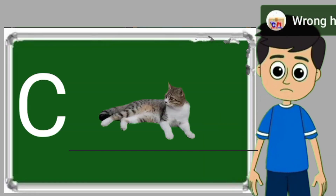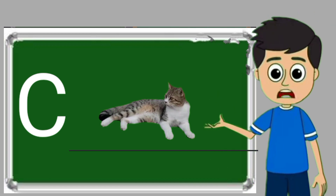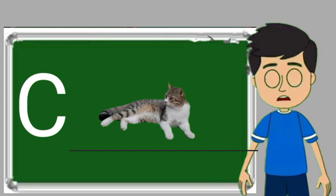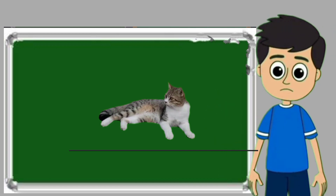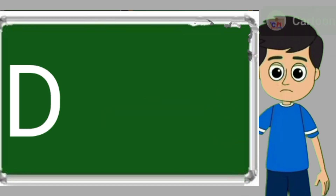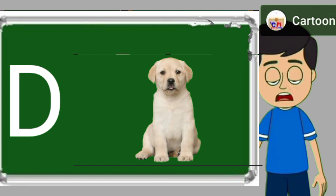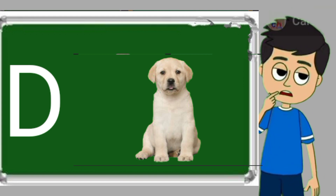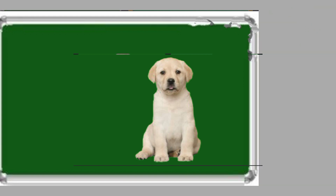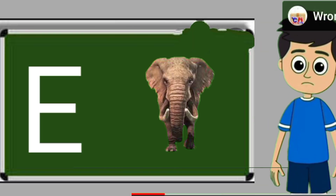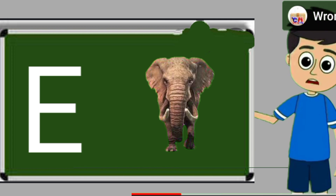C for cat. Cat means billy. D for dog. Dog means kutta.